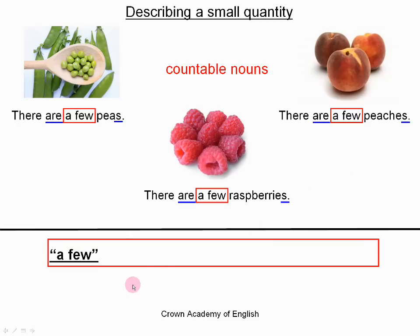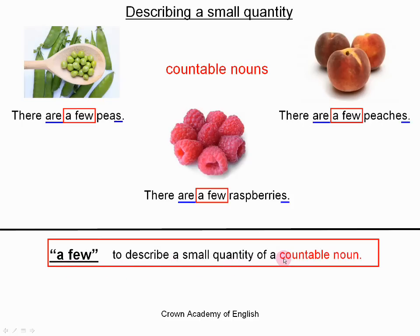So this gives us our first rule: we use 'a few' to describe a small quantity of a countable noun. If the noun is a countable noun, we must only use 'a few.' We do not use 'a little' with countable nouns.